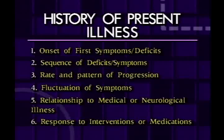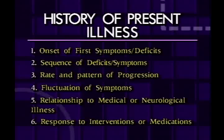Next, identify whether there's any relationship to medical or neurological illnesses. If the family says he was fine until he had surgery and lost a lot of blood and woke up not himself, or was fine until a big stroke and has been confused since, you might infer this is not Alzheimer's disease, but perhaps post-anoxia dementia — dementia following low oxygen to the brain — or vascular dementia caused by multiple strokes.